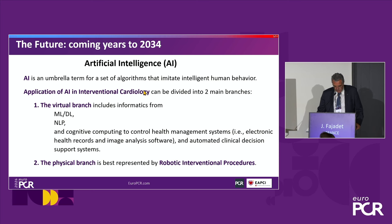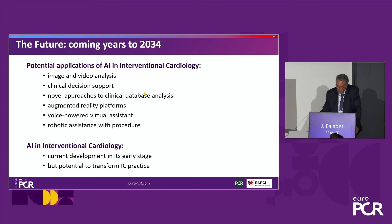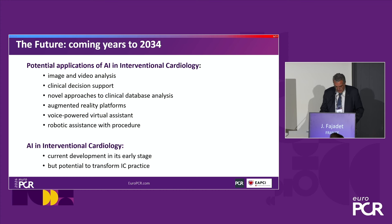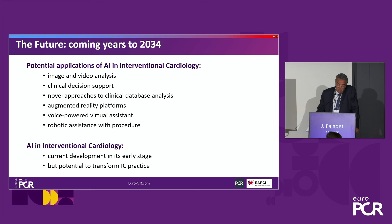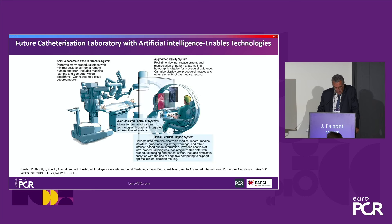Artificial intelligence is an umbrella term for multiple algorithms that imitate intelligent human behavior — and it will certainly be more efficient than our brain. AI applications in interventional cardiology will divide into two main branches: the virtual — machine learning, deep learning, and connective computing to control health management systems — and the physical branch, represented by robotic procedures. The future catheterization laboratory schema: the operator will sit in front of a large screen, with a clinical decision support system collecting all electronic and medical data.